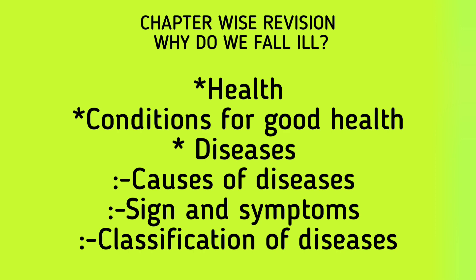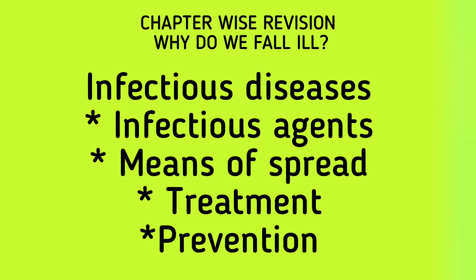Infectious or communicable diseases can spread from an infected person to a healthy person — examples include tuberculosis and cholera — caused by external factors such as viruses, bacteria, and fungi. Non-infectious or non-communicable diseases cannot spread from person to person and are caused by internal factors, for example cancer and heart diseases. Infectious agents include viruses, bacteria, fungi, protozoa, and worms.